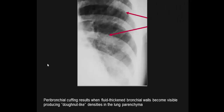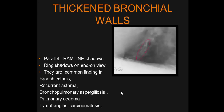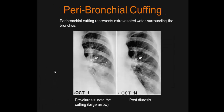Bronchial wall thickening and peribronchial cuffing: fluid thickening the bronchial wall becomes visible, producing donut-like densities in the lung parenchyma. Thickening of the bronchial wall produces parallel tram-line shadows. Ring shadows on face view are a common finding in bronchiectasis, asthma, allergic bronchopulmonary aspergillosis, pulmonary edema, and lymphangitis carcinomatosa. Peribronchial cuffing represents extra-vasated water surrounding the bronchus.